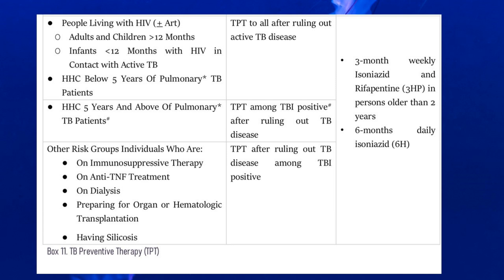For people living with HIV — any adult or child more than 12 months, or infants less than 12 months with HIV in contact with active TB — give TPT after ruling out active disease. The TPT options are either 3 months of weekly isoniazid-rifapentine, which will be available in the program soon, or 6 months of daily INH. WHO has come out with many regimens: 3 months weekly, 6 months INH, 4 months rifampicin — there are a lot of combinations.